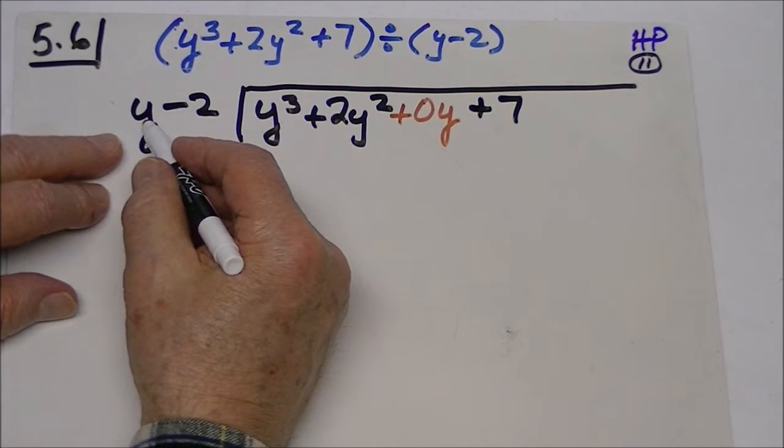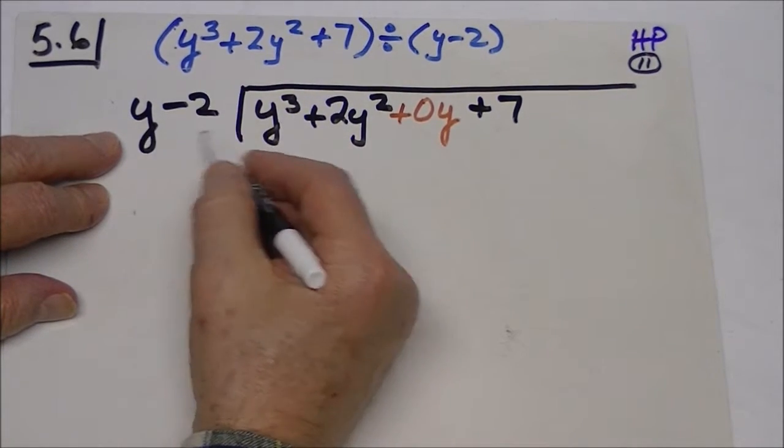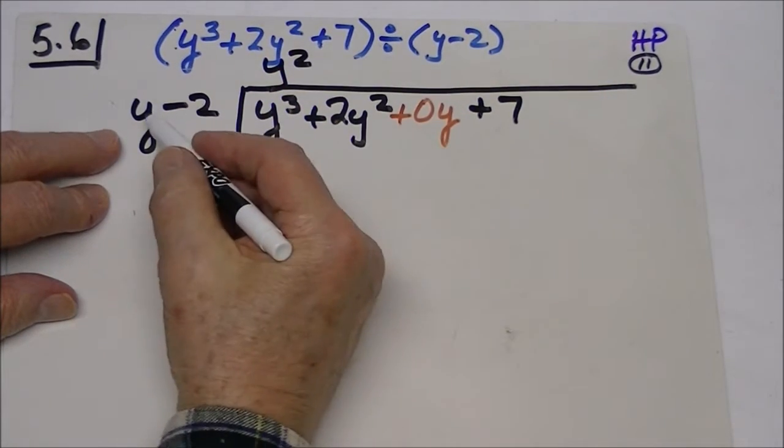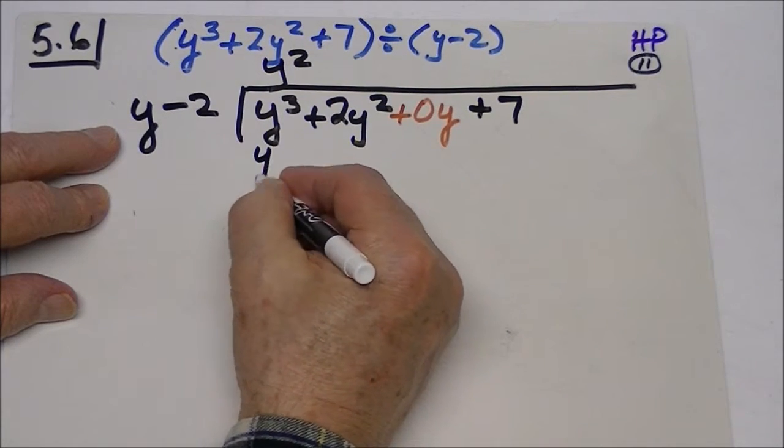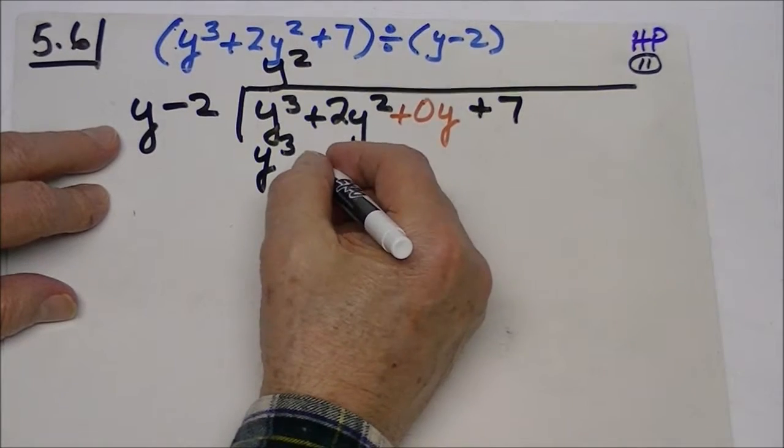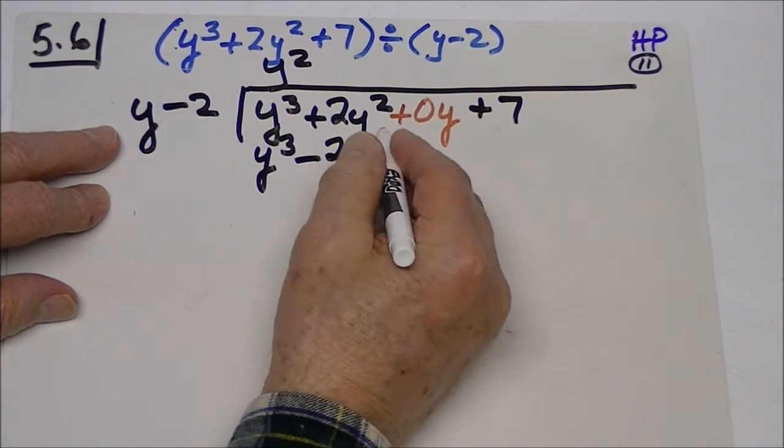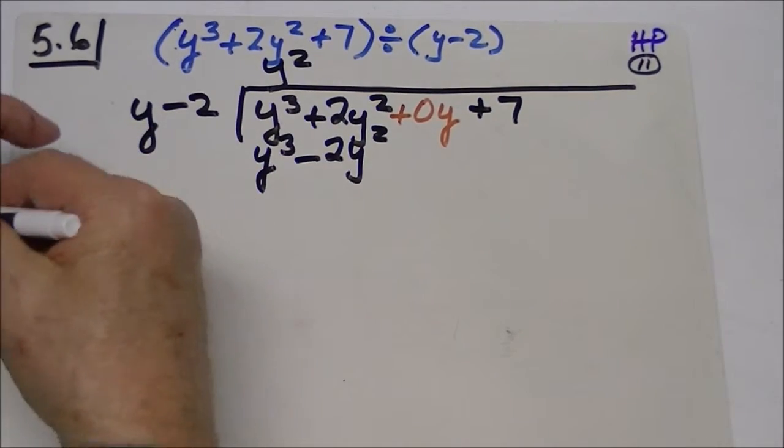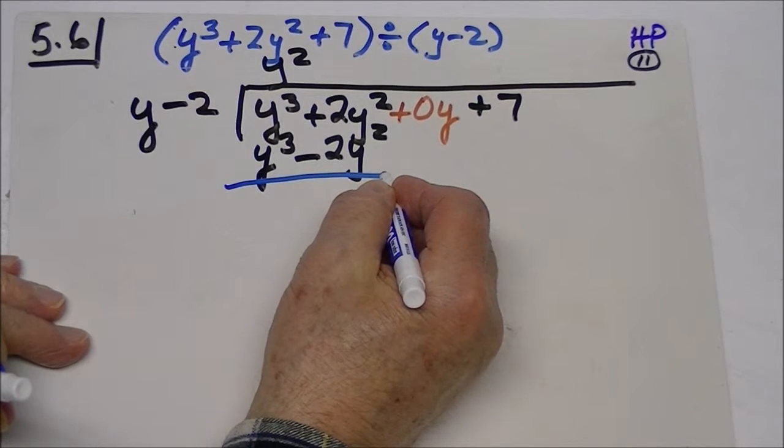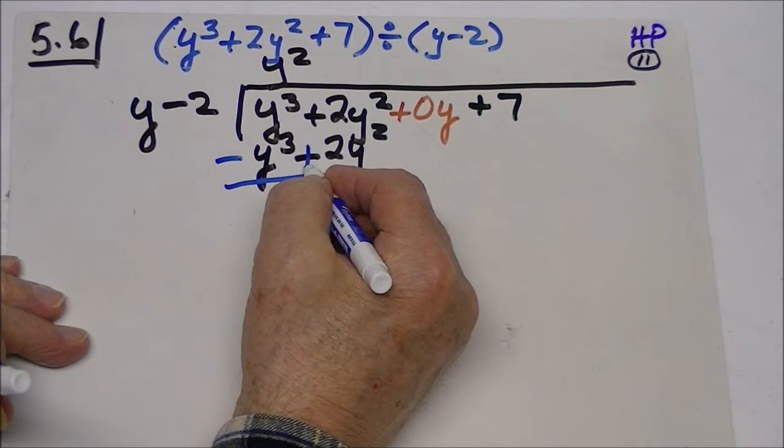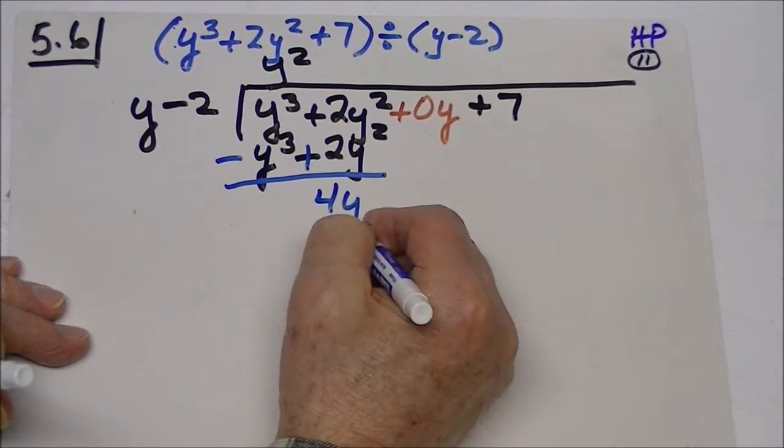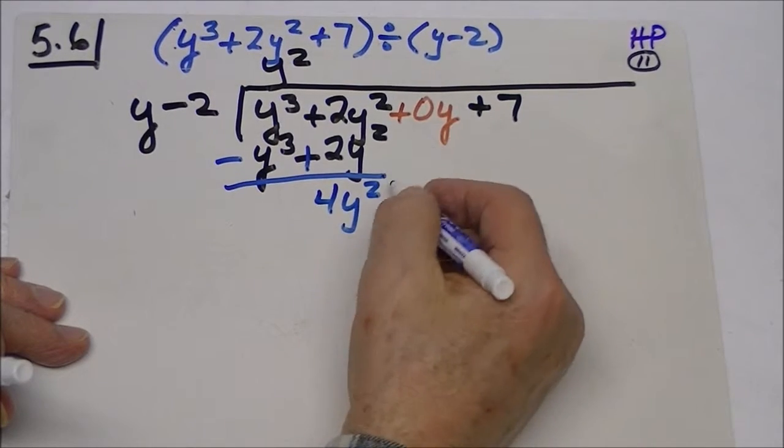So now we're set up to do it. In a sense, we're just going to take this term divided by this and we get y to the second up there. Now y times y to the second is y to the third. A negative 2 times this is a negative 2y to the second. Now the rule is as we put our line underneath it, we need to change our signs. So this cancels out, this now becomes 4y to the second, we bring down this term.